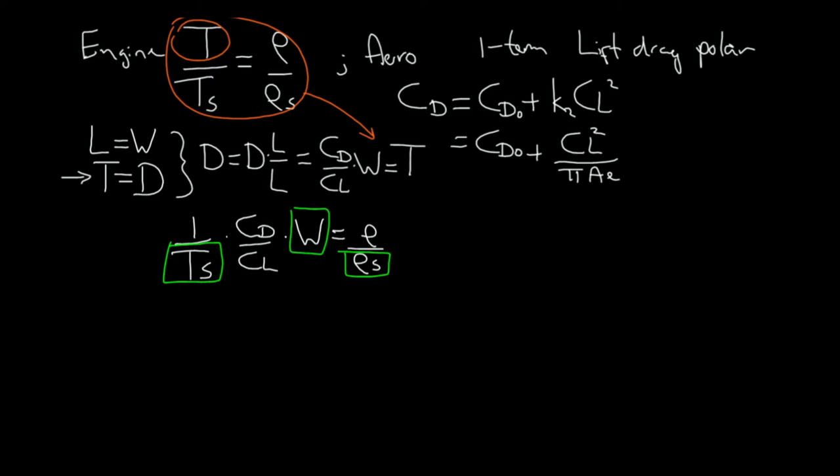So if we are interested to fly as high as possible we should have minimum air density. And we can write this as the air density at the stratosphere divided by the thrust level at the stratosphere times CD over CL times the weight.